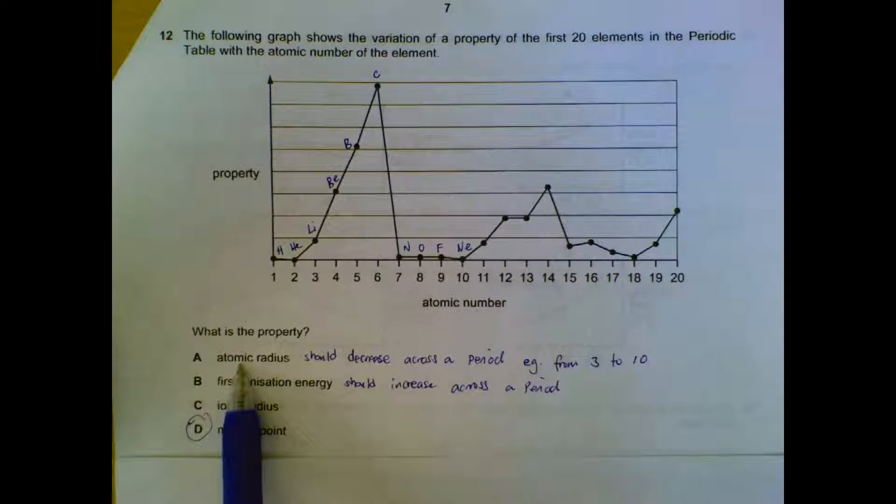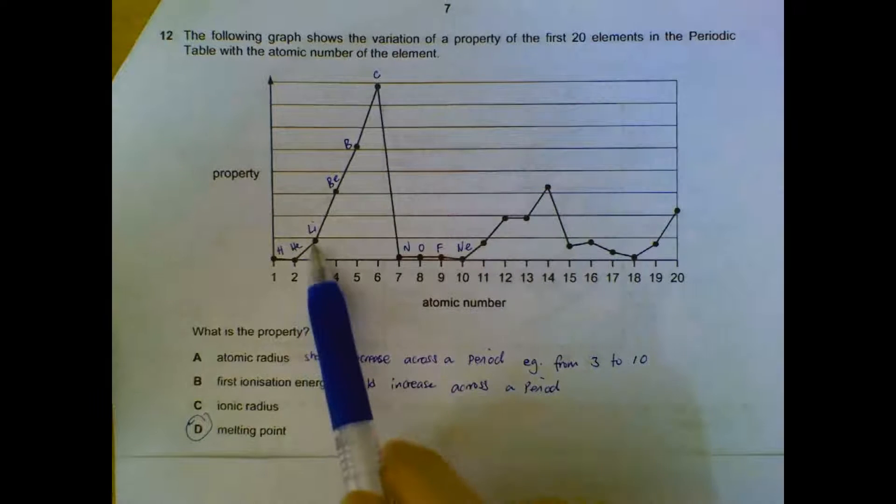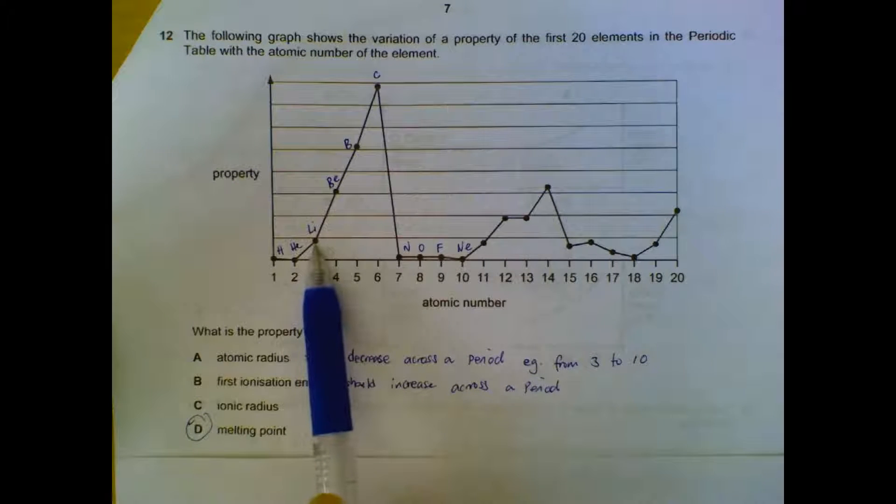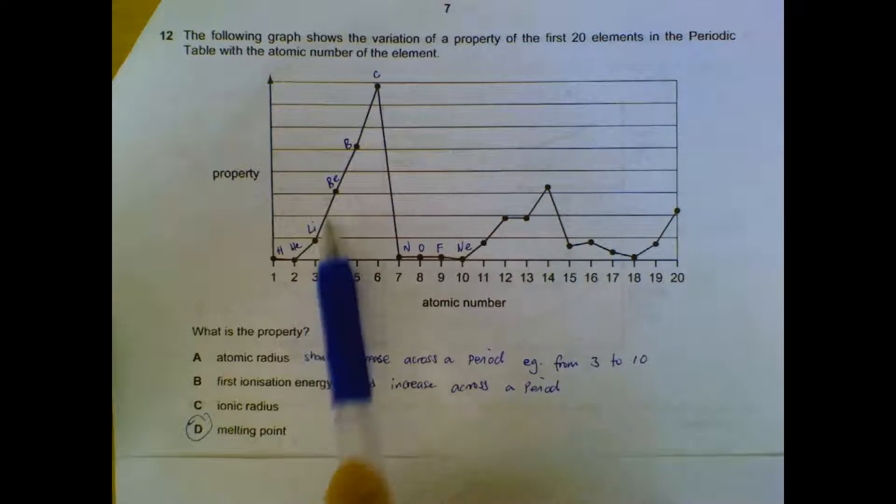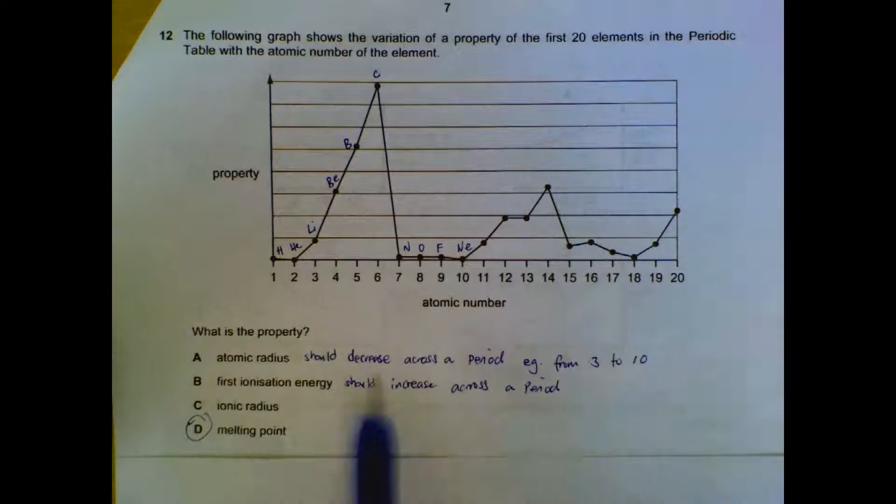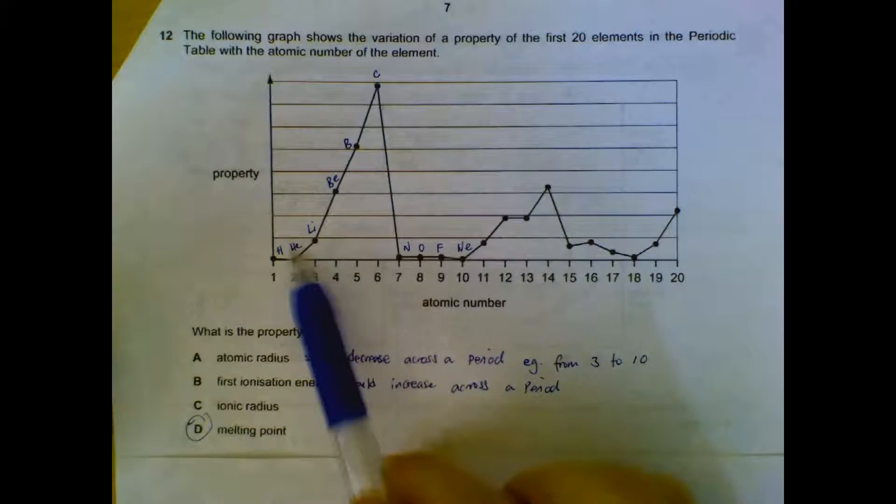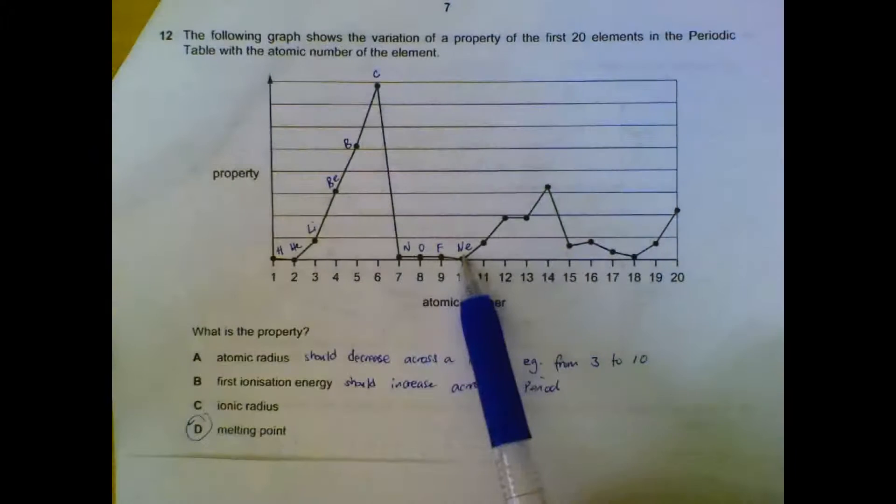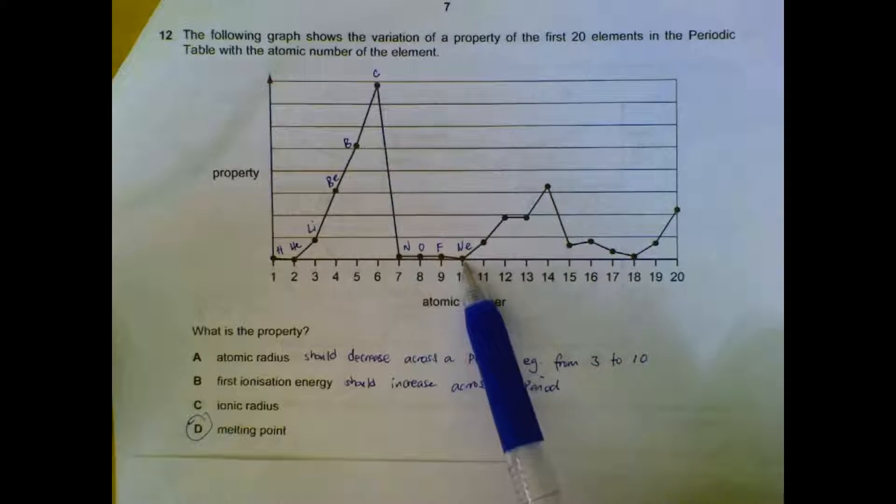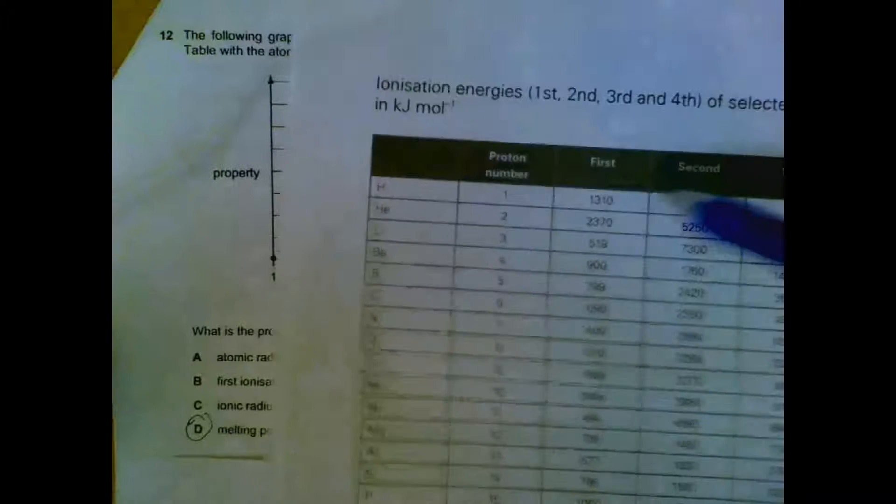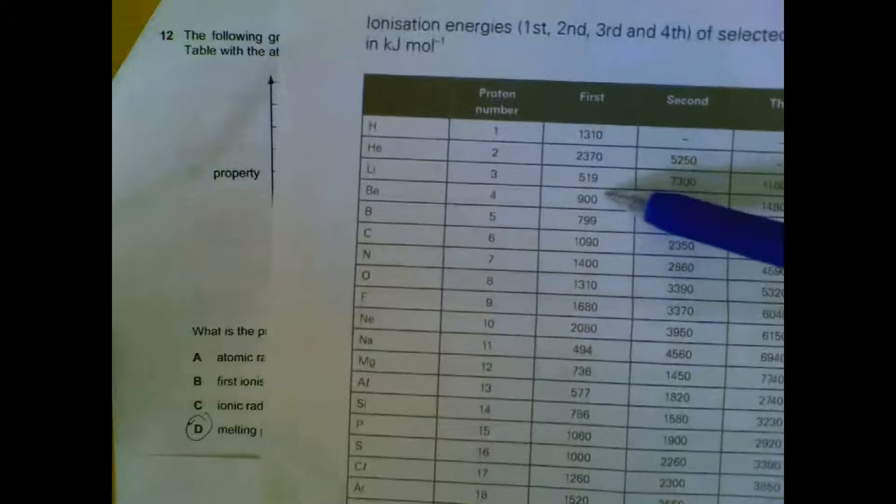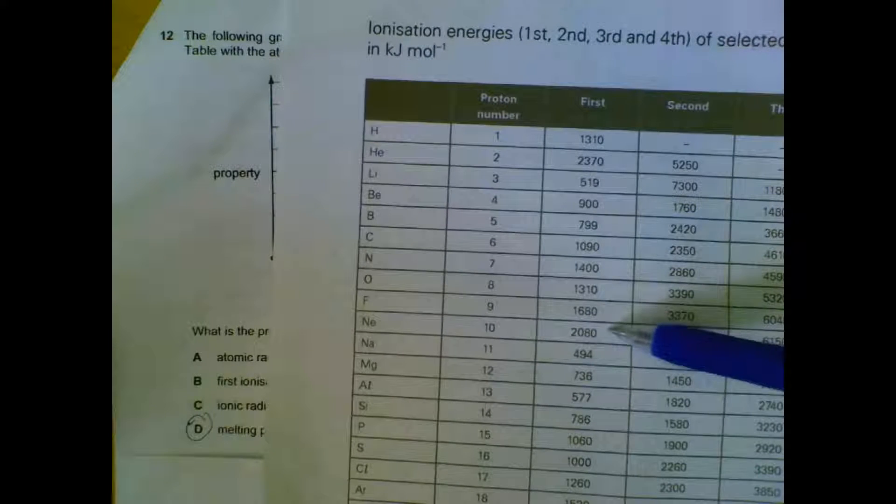If you look at the other options, option A, atomic radius across the period generally will decrease due to the increasing nuclear effect. Ionization energy should increase across the period, and if you take the second period as example, it should hit the maximum at neon. You can check your data booklet. If you look at the first ionization energy, neon will be the peak for the second period, which is not reflected here. So B is also wrong.